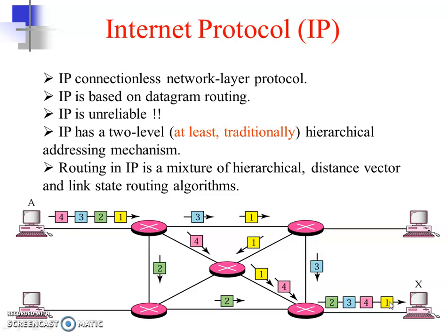Some things you should remember about IP: IP is a connectionless network layer protocol, it is based on the datagram approach, and very importantly, IP is an unreliable protocol. So it is a network layer protocol which uses the datagram approach and it is an unreliable protocol.